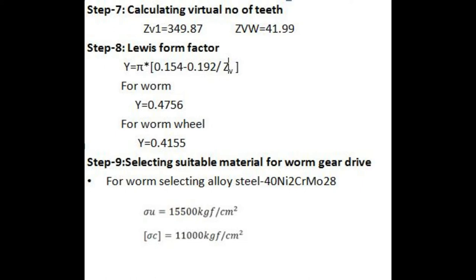Step 9: Selecting suitable material for worm gear drive. For worm, selecting alloy steel 40Ni2CrMo28. The ultimate strength equals 15,500 kgf per centimeter square and design contact stress equals 11,000 kgf per centimeter square.